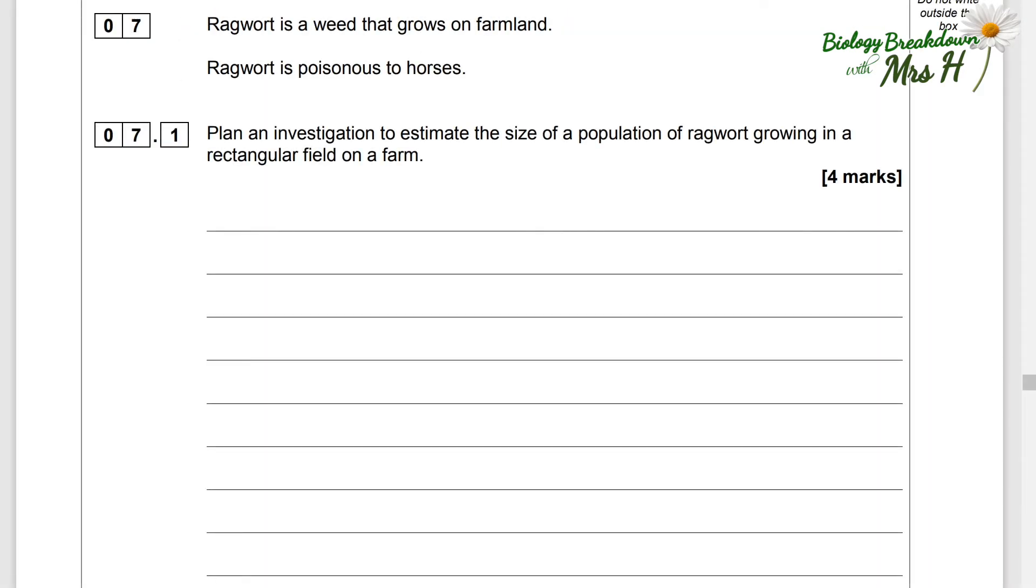Question seven. Ragwort is a weed that grows on farmland. Ragwort is poisonous to horses. Plan an investigation to estimate the size of a population of ragwort growing in a rectangular field on a farm. This is like one of your required practicals right here.